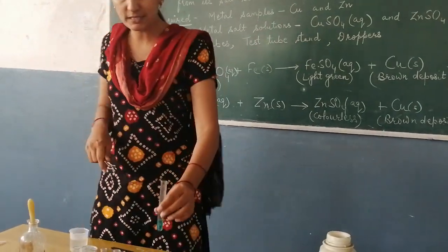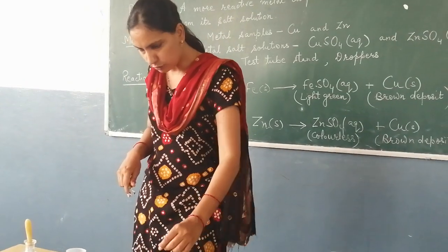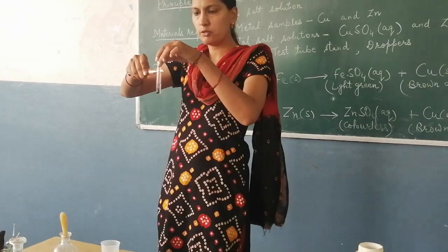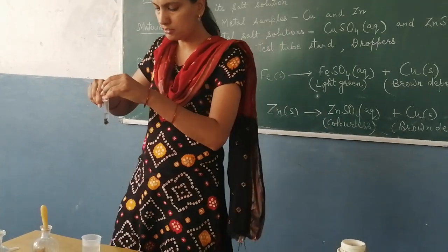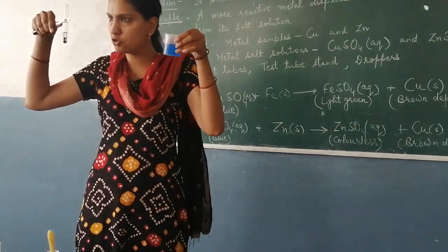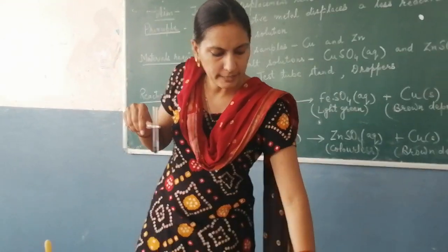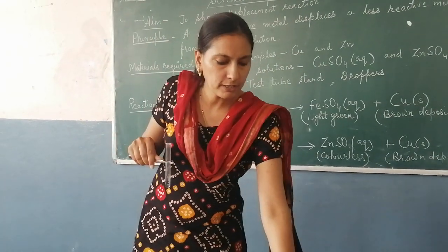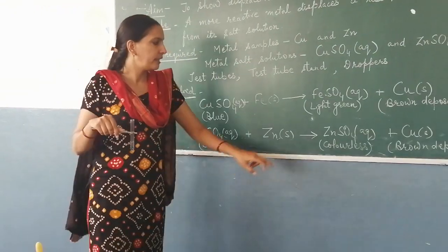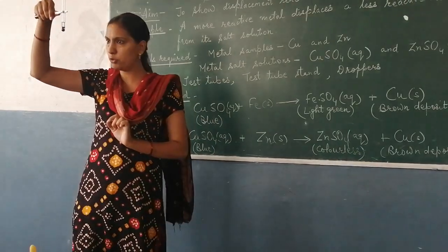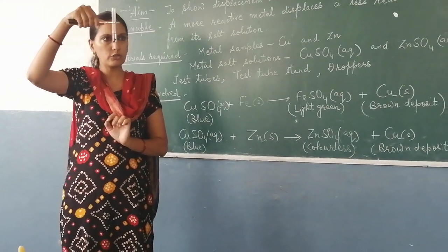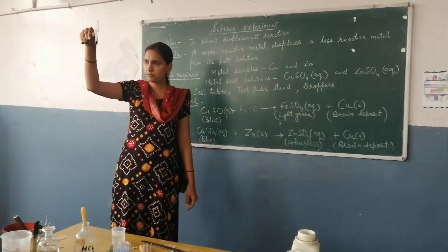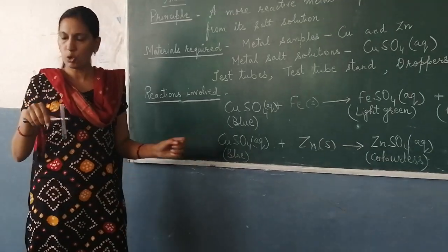Next, we will perform this activity with zinc. I have taken copper sulfate solution in this test tube. I take some zinc granules and put them in this test tube. After some time, we will see that the zinc sulfate will be colorless from blue. It is a colorless solution, and we can see the brown deposit in the test tube. This is the second equation.